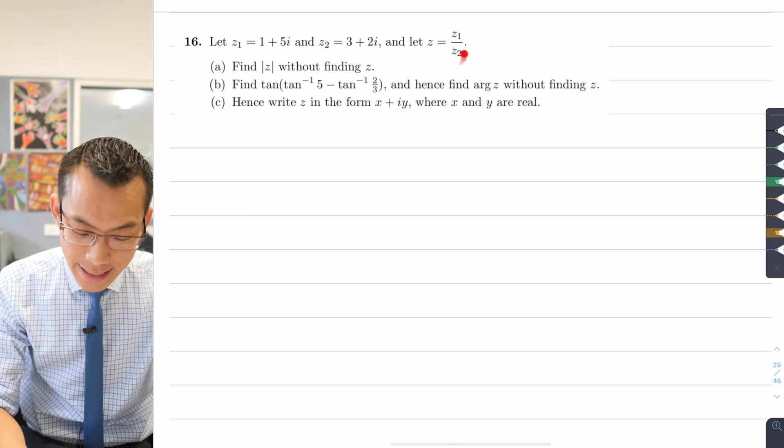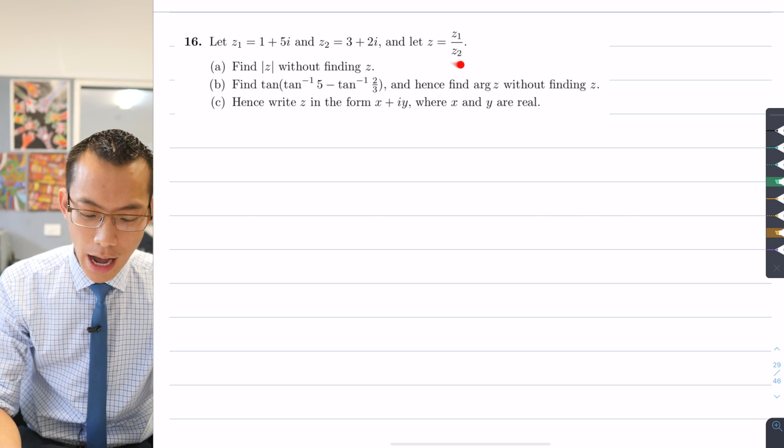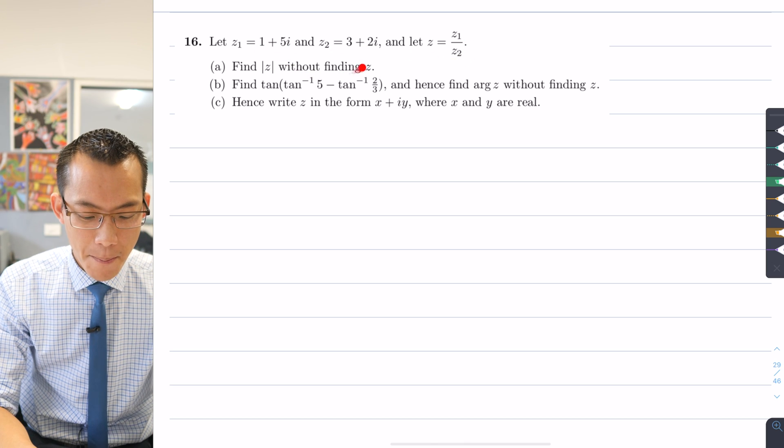Then they say let z, this particular number which we're going to focus on throughout this question, let it be the quotient of z1 and z2. What happens when you divide this complex number by this one?